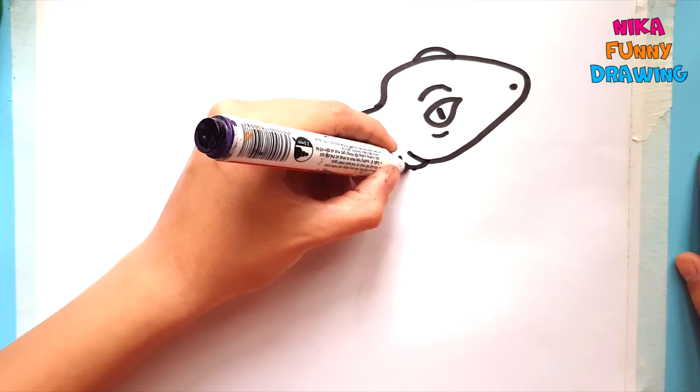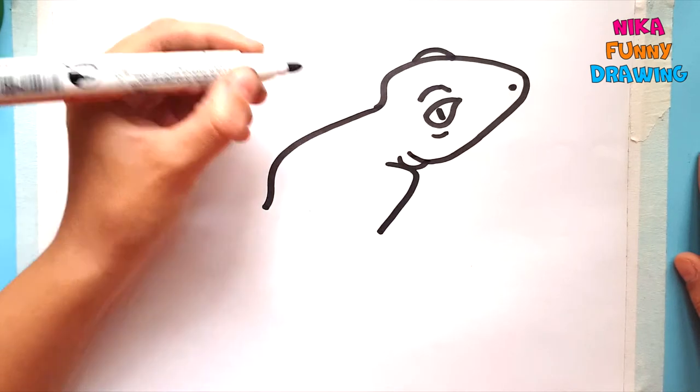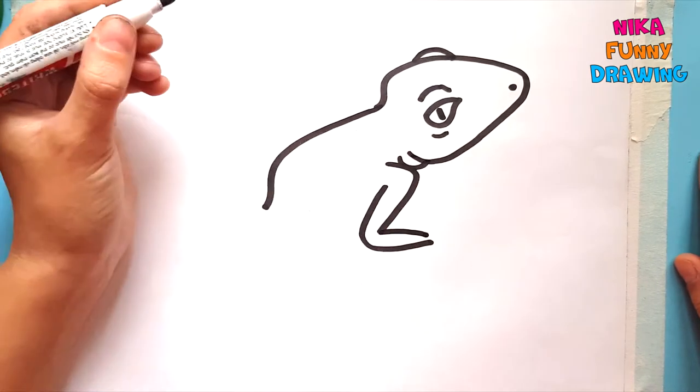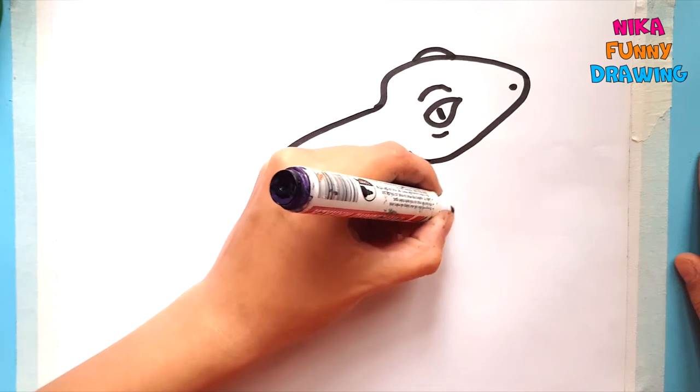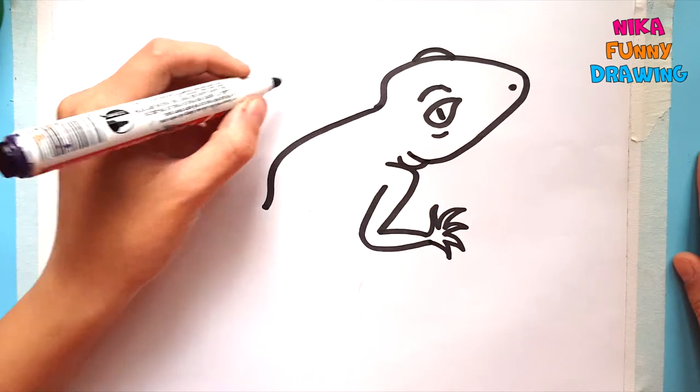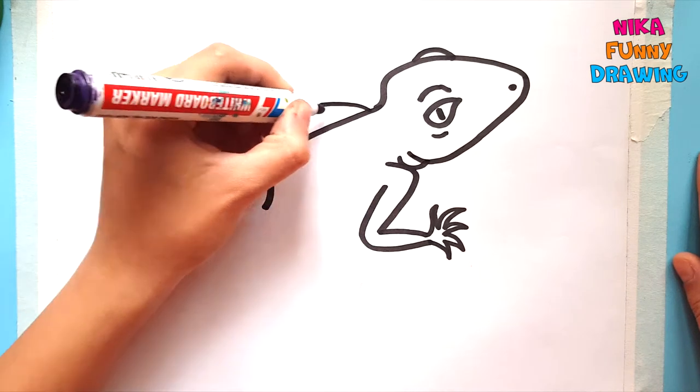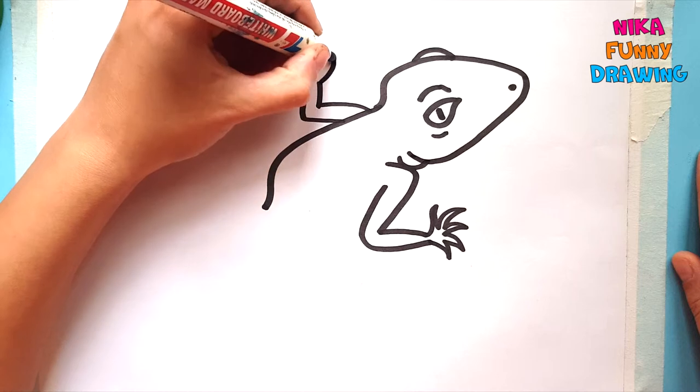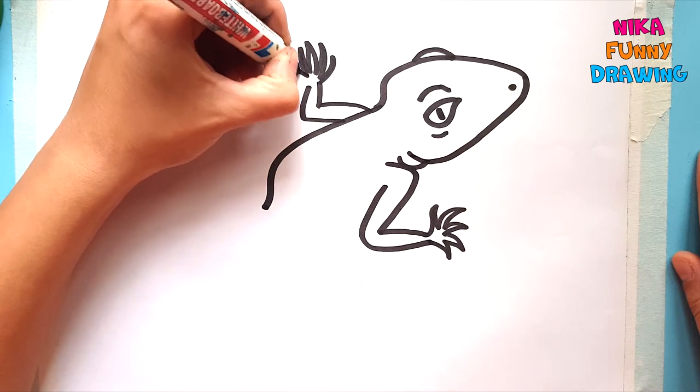Our lizard has four legs. One leg. One, two, three, four, five toes. Another leg. One, two, three, four, five toes.